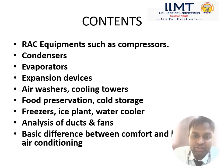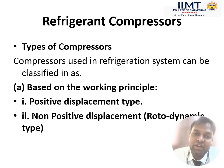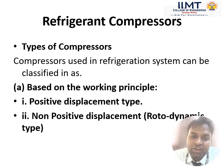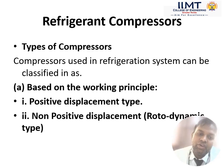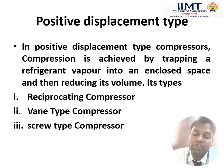Regarding the refrigerant compressor used in refrigeration and air conditioning industries, there are basically two types classified based on working principle. The first is positive displacement type and the second is non-positive displacement type. In positive displacement type, compression is achieved by trapping refrigerant gas into an enclosed space and then reducing its volume.